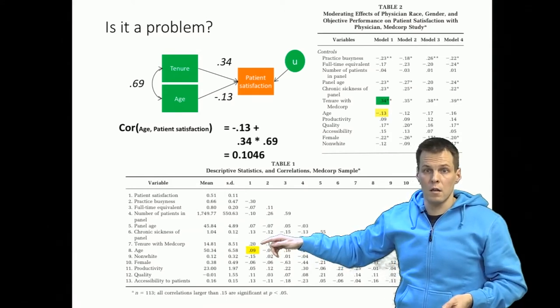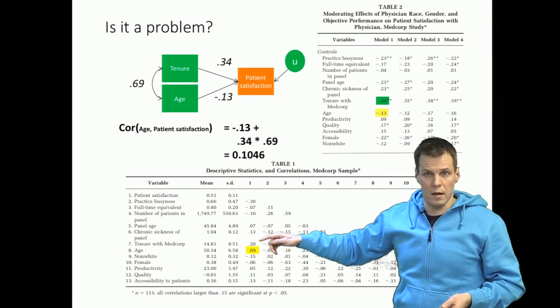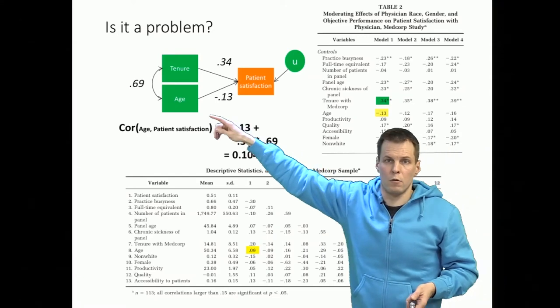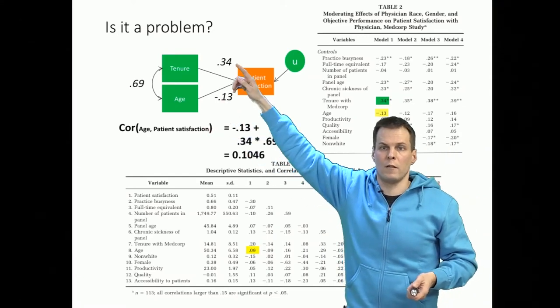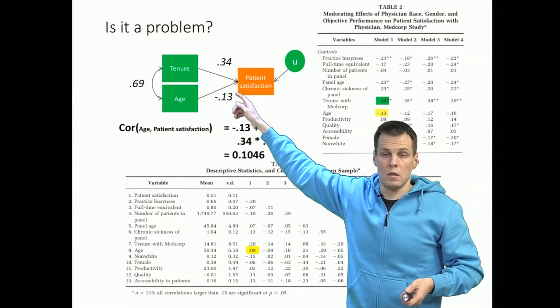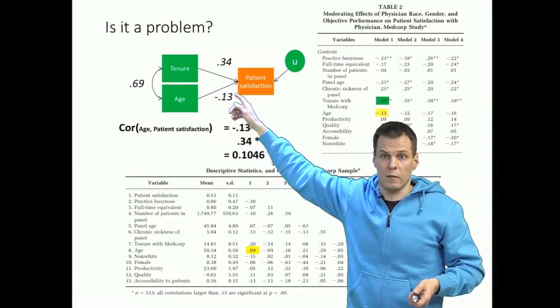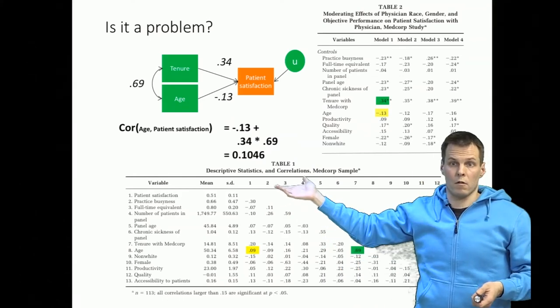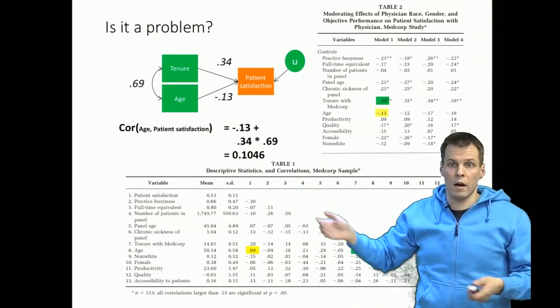So this correlation is a sum of spurious effect and a direct effect, and in this case the spurious effect due to correlation between tenure and the effect of tenure, which is strong, is a lot stronger than the direct effect of age. Therefore we get a positive correlation. So that's how regression analysis works.